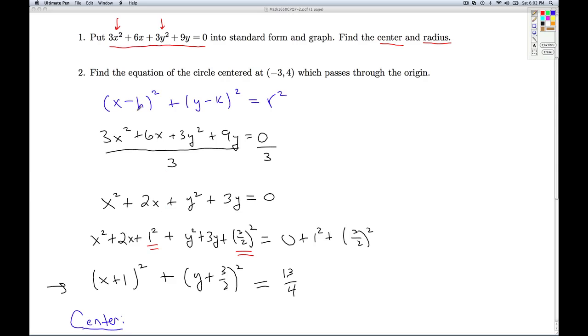Well, the center of this circle is (h, k). So if I have x - h, the x coordinate of the center is h itself, y - k. So I'm taking opposites here. So I take opposites here. I see a +1 in the quantity, so I know it's going to be a -1. I see a +3/2 here, I know it's going to be a -3/2.